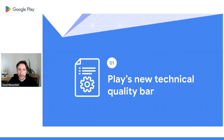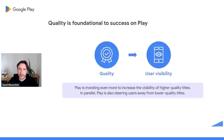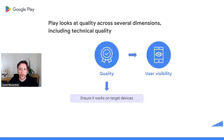First up, the new technical quality bar. As you can imagine, app and game quality is foundational to everything we do at Google Play. We want Play Store users to discover, download, and use great apps and games that work well, are easy to use, and are reliable. Because it's so important, we want to ensure that users are presented with the best quality apps and games for their phones. We're going to be steering users towards high-quality titles and away from lower-quality ones. Quality is a broad concept, and Play looks at it across several dimensions. Technical quality is one of the fundamental ones. In short, technical quality means: does this app or game run well on my device?